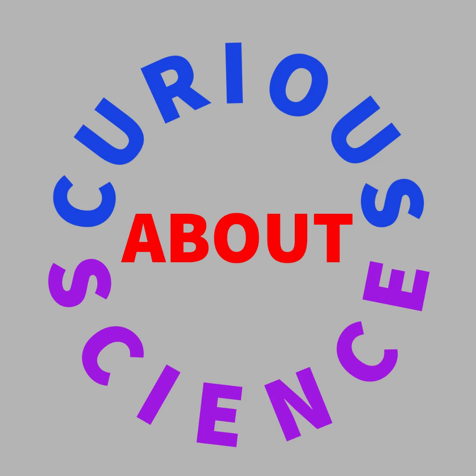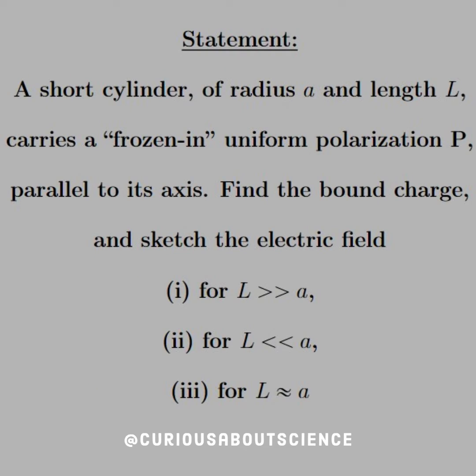Hello, back again. Our statement reads, a short cylinder of radius A and length L carries a frozen-in uniform polarization P, parallel to its axis.